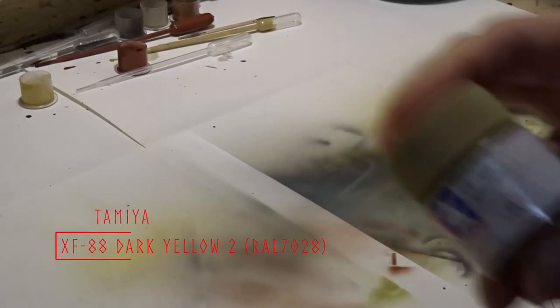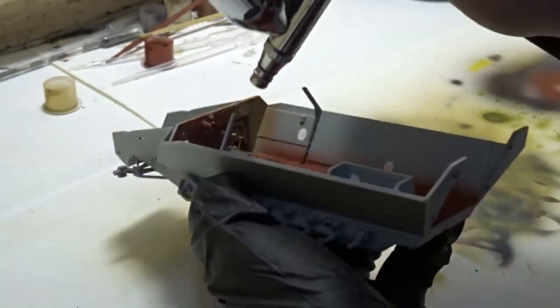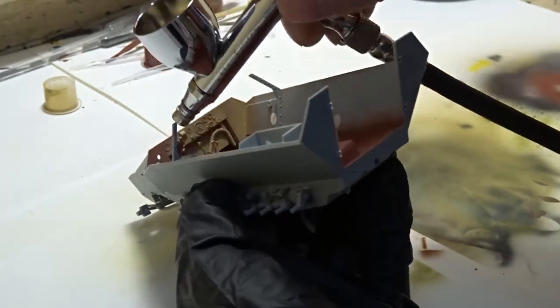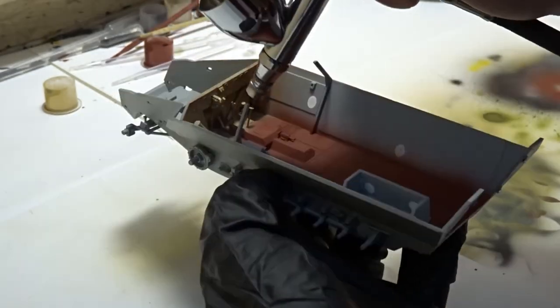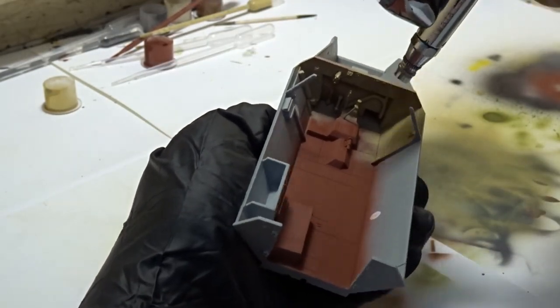Next color to go in the airbrush is Tamiya XF-88, Dark Yellow No. 2. This is actually RAL7028. This is again mixed 1 to 1 with Mr. Leveling Thinner, and is going down with a coat of hairspray over the floor.